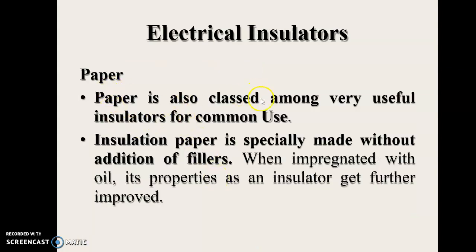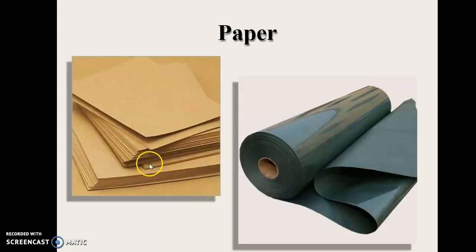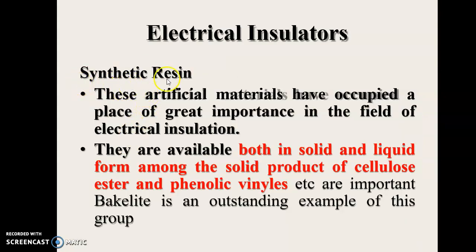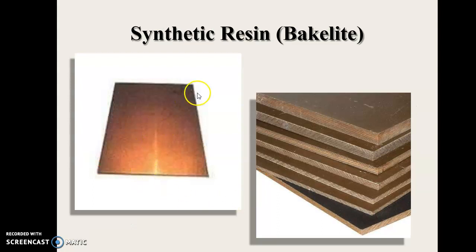Paper is also classed among very useful insulators for common use. Insulation paper is specially made without addition of fillers; when impregnated with oil, its properties as an insulator are further improved. Synthetic resins are artificial materials that have occupied a place of great importance in the field of electrical insulation; they are available in both solid and liquid form, including cellulose esters and phenolic vinyls — for example, bakelite.